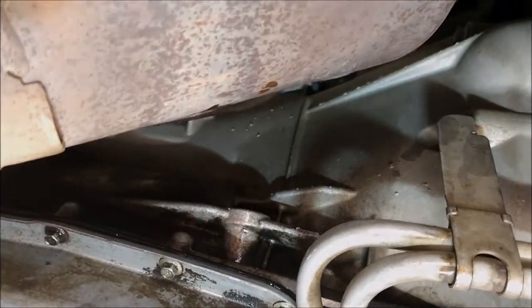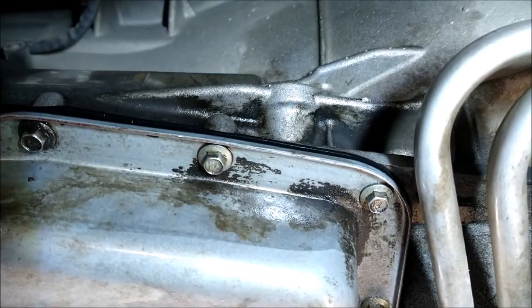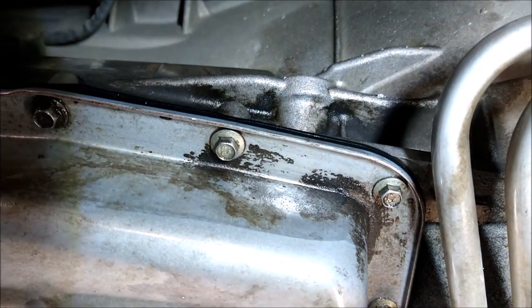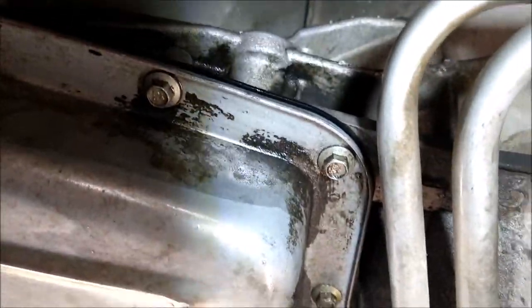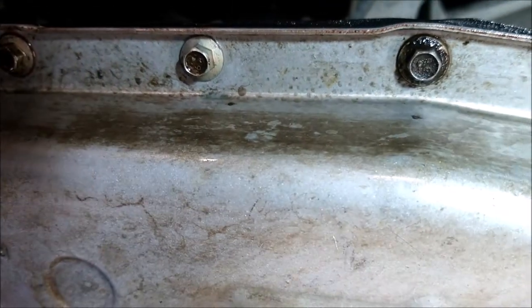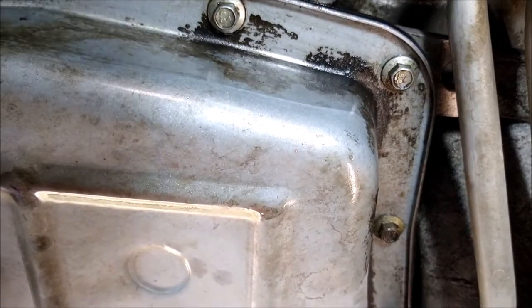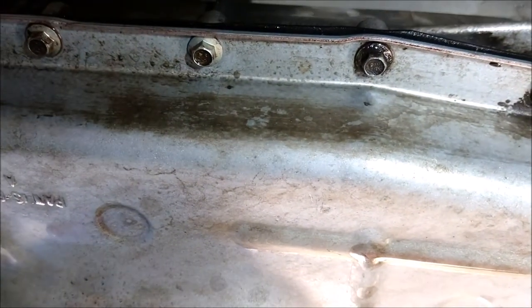All right, now that we've got the pan drained—we used the transfer pump and drained the pan—now we've got 10,000 8-millimeter bolts all around the perimeter that you got to get off, and then you can drop the pan. And even though you drain the pan, have a catch pan below it because there's going to be stuff that you couldn't get. So definitely do that.